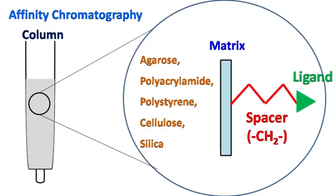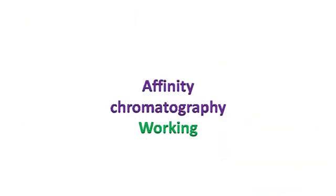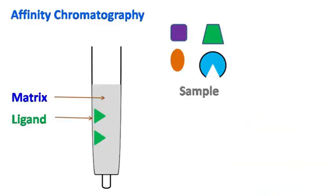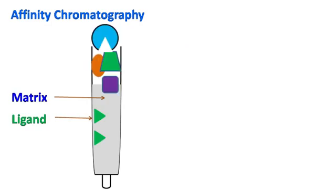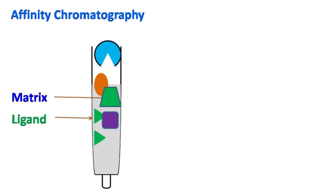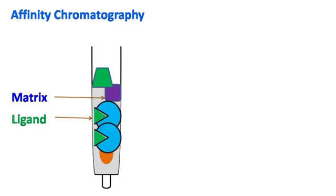Let's see the working of affinity chromatography. When the mixture of different molecules is passed through the affinity column, only the molecule that has specific affinity for the ligand binds the ligand. The other molecules are washed away.